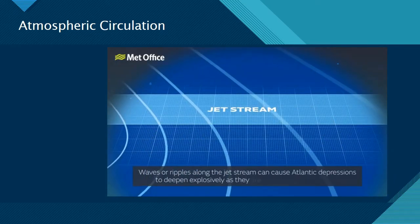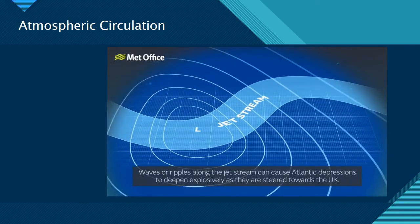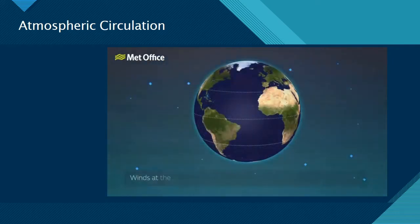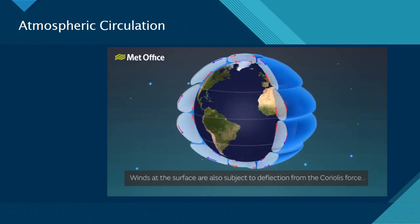Waves or ripples along the jet stream can cause Atlantic depressions to deepen explosively as they are steered towards the UK.